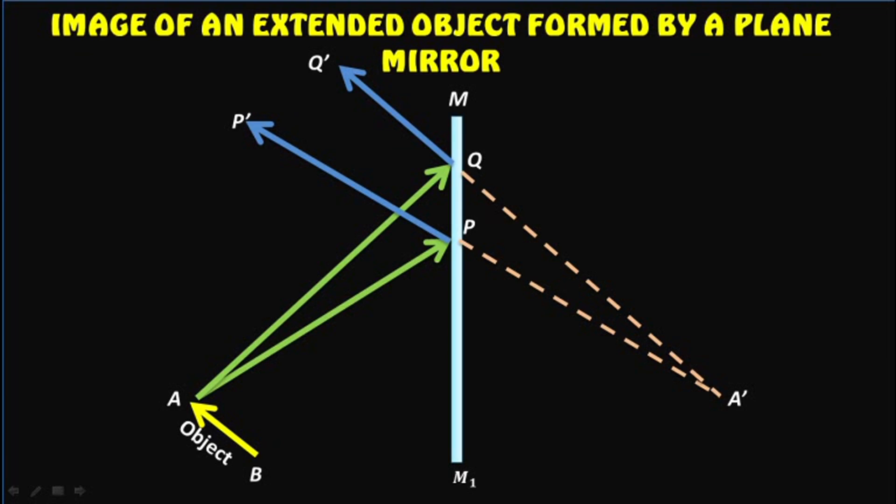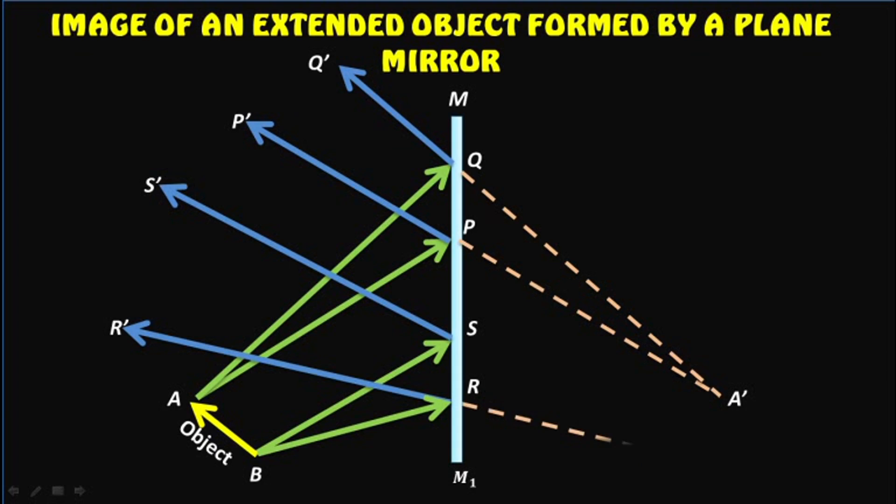Similarly, from point B of the object, BR and BS be the two incident rays on the mirror which are reflected as RR' and SS' respectively. The reflected rays RR' and SS' meet at a point B' when produced backwards. Thus B' is the virtual image of point B. Similarly, for all other points of the object AB, virtual images are formed between A' and B'.